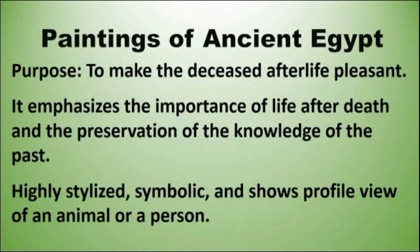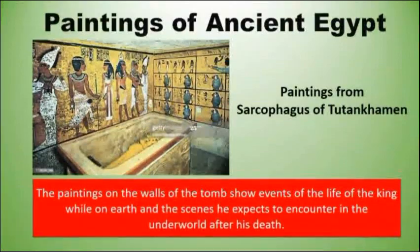Ilan sa mga characteristic ng mga paintings under ancient Egypt ay highly stylized, symbolic, and shows profile view of an animal or a person. Gumamit na sila ng mga kulay gaya ng red, black, blue, gold, and green na nanggaling sa mga mineral pigments — na kahit nakababad ito sa sinag ng araw, ay hindi ito madaling kumupas. Isa sa halimbawa nito ay ang Sarcophagus from Tutankhamun, na kung saan makikita ang mga kaganapan ng hari noong siya ay nabubuhay pa at kung ano ang nais mangyari sa underworld matapos ang kanyang kamatayan.